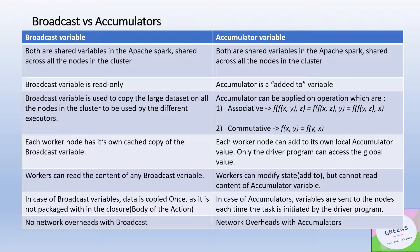A broadcast variable is meant to share some common data across all the nodes in the cluster. Each worker node has its own copy of that data wrapped in the broadcast variable and can read it. In contrast, each node can only add to the accumulator variable — they cannot read it. Only the driver program has access to read the accumulator.